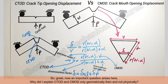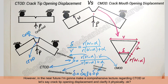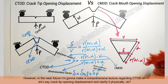An important question arises: why did I explain CT-OD and CM-OD only geometrically and not physically? CT-OD — crack tip opening displacement — is physically a rather heavy and important concept in fracture mechanics. It would have been difficult to explain it physically at an early stage. However, in the near future I'm going to make a comprehensive lecture regarding CT-OD and clarify it physically.